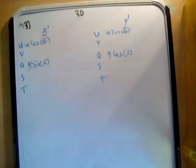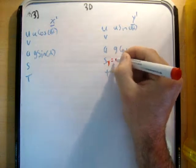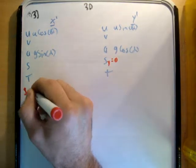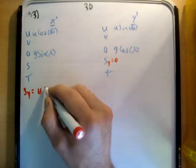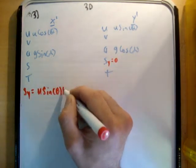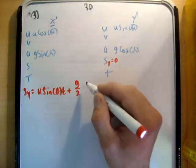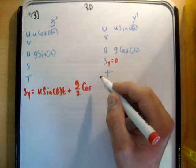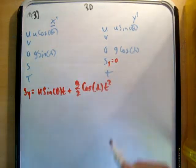So now we need to find the time of flight. So we know of course that the time of flight is given by when s_y, the distance above the x' axis, is equal to 0. So s_y is equal to ut plus a half a t squared. So it's u sine theta t plus g over 2 cos alpha t squared. And that's equal to 0.